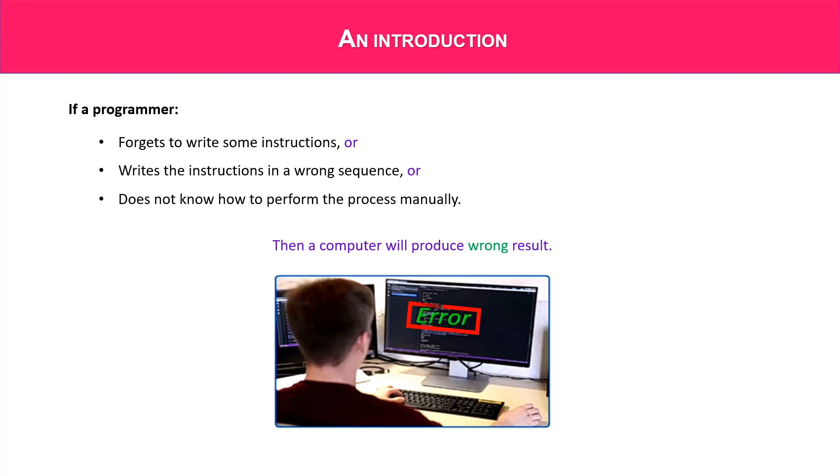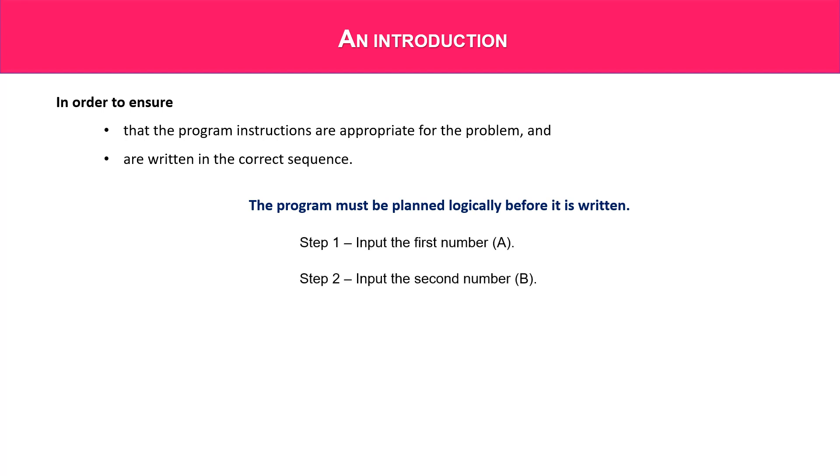If a programmer forgets to write some instructions or writes the instructions in a wrong sequence or does not know how to perform the process manually, then a computer will produce wrong result. In order to ensure that the program instructions are appropriate and written in the correct sequence, the program must be planned logically before it is written.